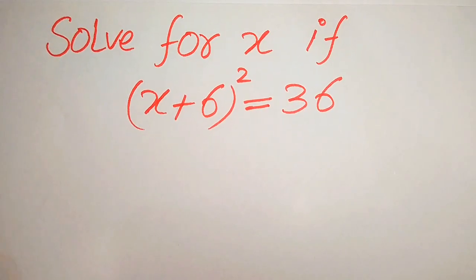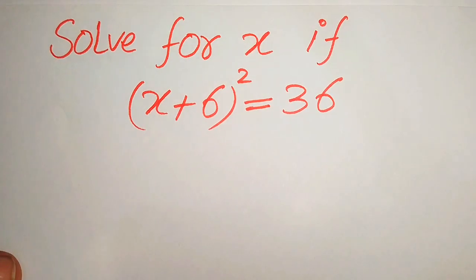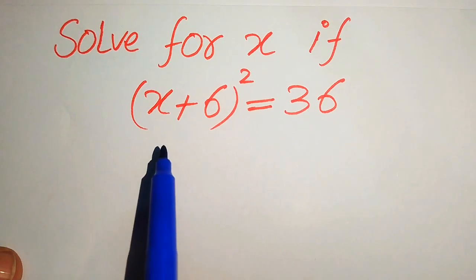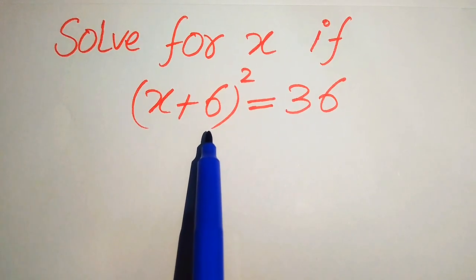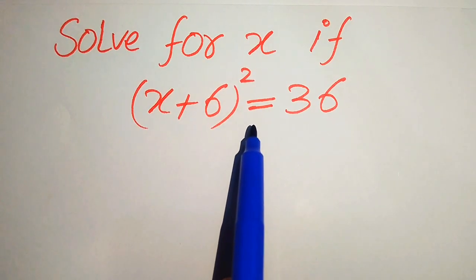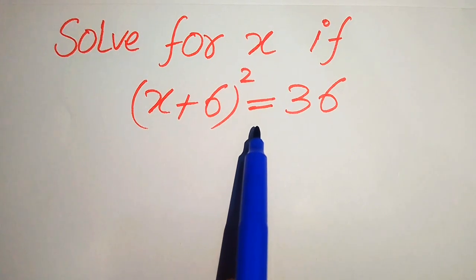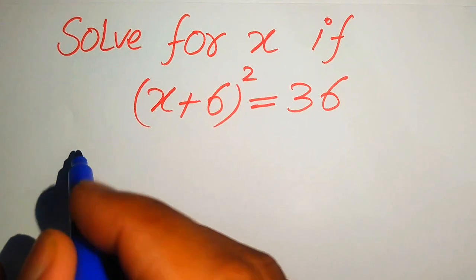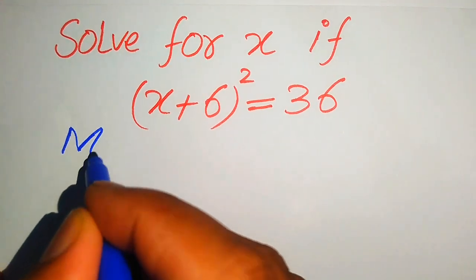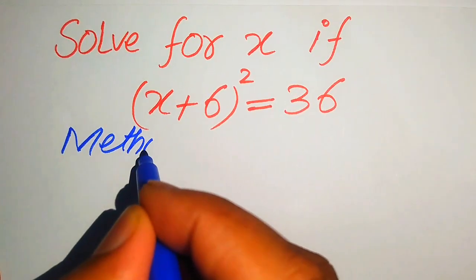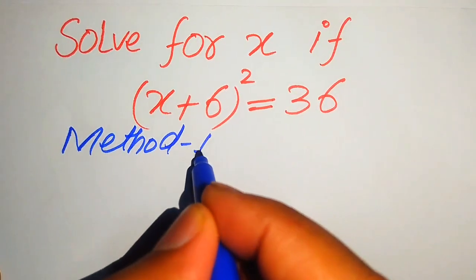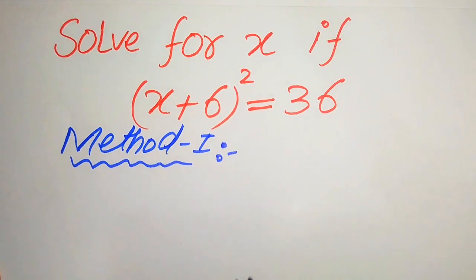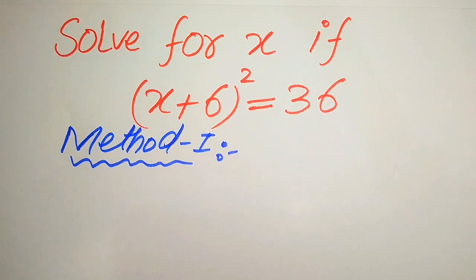Hello everyone, today I want to show you how to solve this problem for the values of x if we have (x + 6)² = 36. We solve this problem using two methods. If you have any other method in mind, please don't hesitate to write it in the comment section.